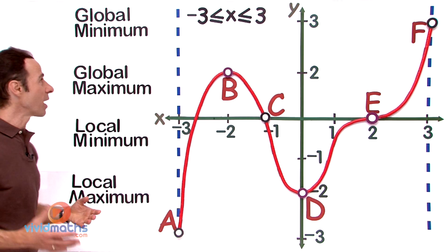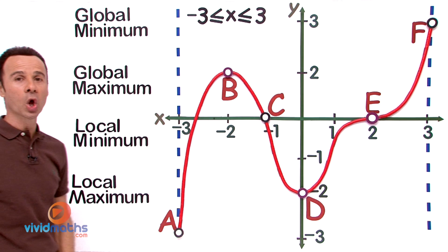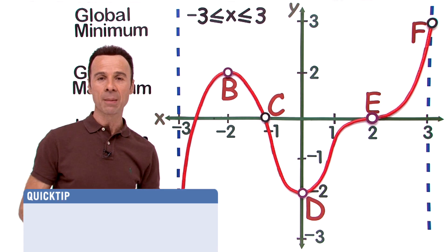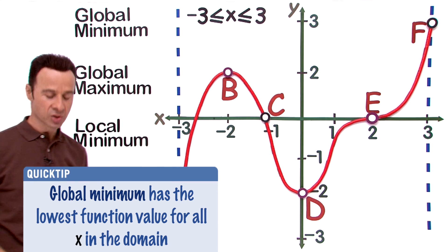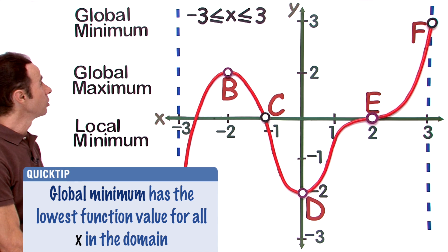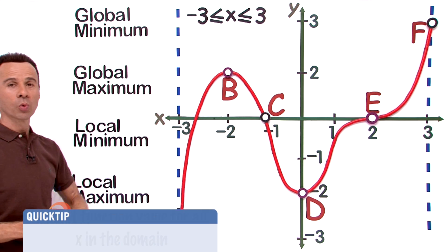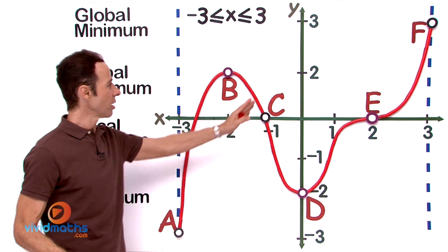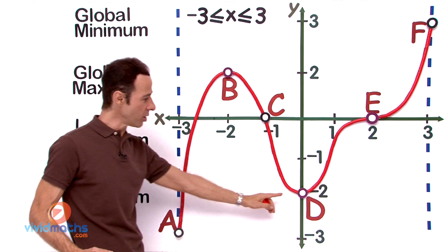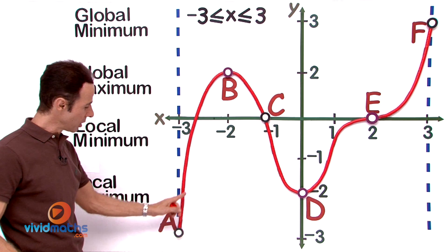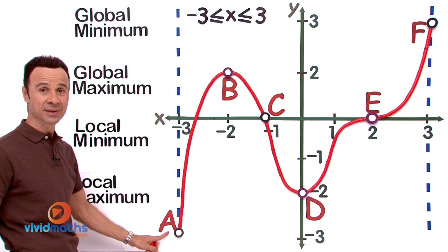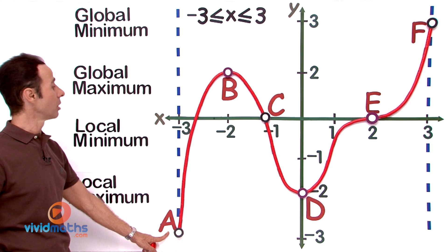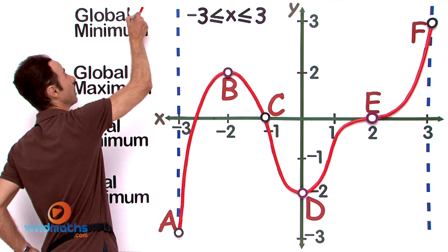What we are after first of all is the global minimum—that means the overall minimum. So as you look at that, what is the lowest point in that restricted area from -3 to +3? Well, it is going to be down, down, down—not here but even lower—we come all the way down there at point A. So that is going to be our global minimum, A.